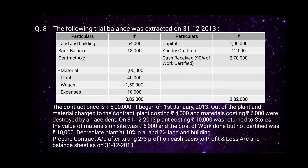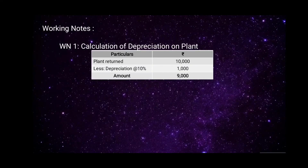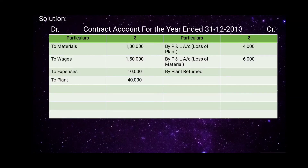On 31st December 2013, plant costing rupees 10,000 was returned to stores. Depreciation on plant is 10 percent per annum. Working Note 1: plant returned amount is 10,000, depreciation at 10 percent is 1,000, so the net amount of plant returned is rupees 9,000. We record it on the credit side as 'By Plant Returned', amount rupees 9,000.